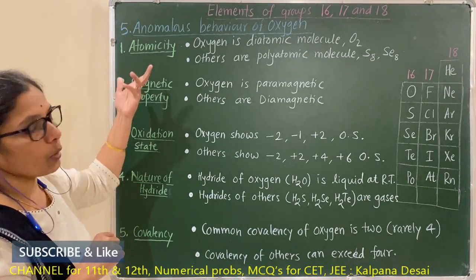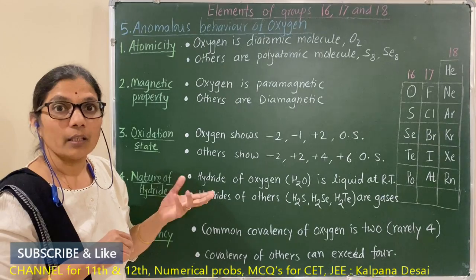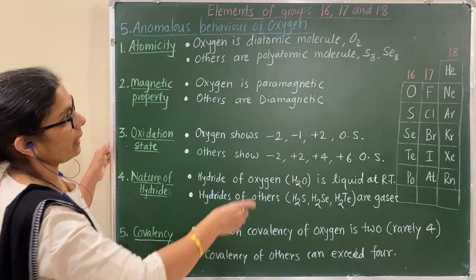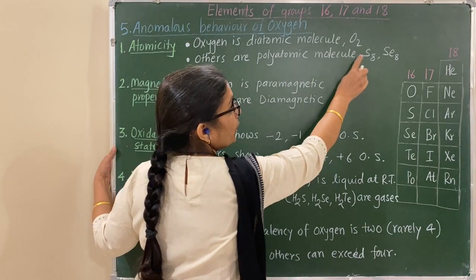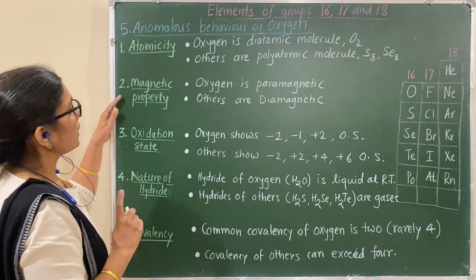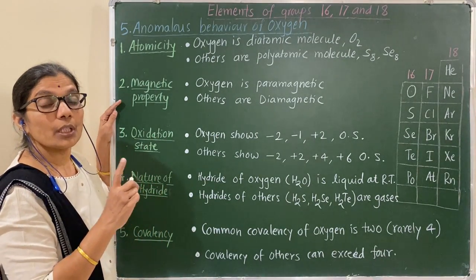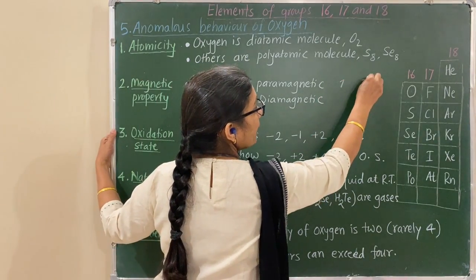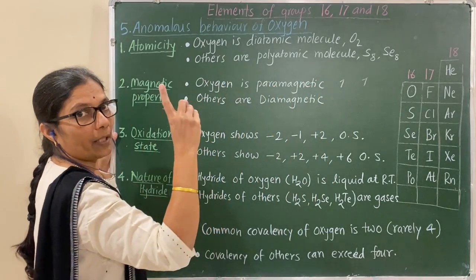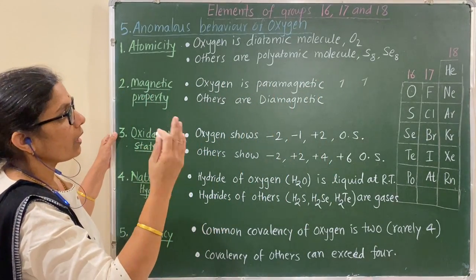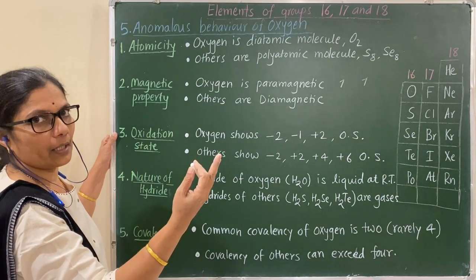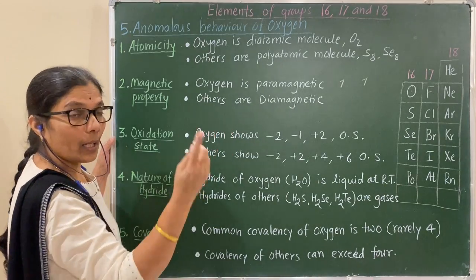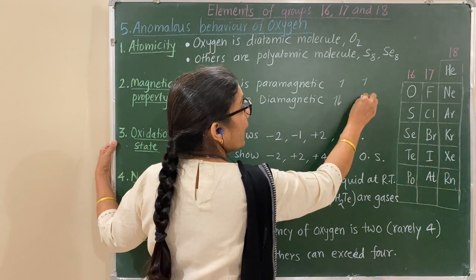First, atomicity: oxygen is a diatomic molecule O₂, while other members like sulfur and selenium are polyatomic molecules such as S₈, Se₈. Next, magnetic properties: oxygen is paramagnetic, meaning it contains unpaired electrons, while other members are diamagnetic, meaning they contain paired electrons.